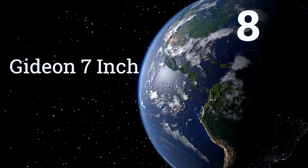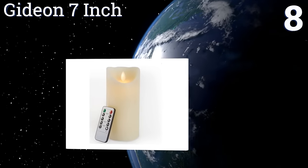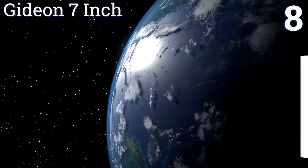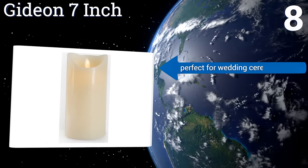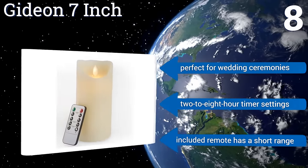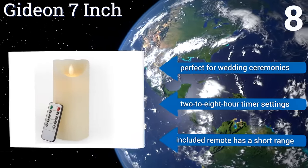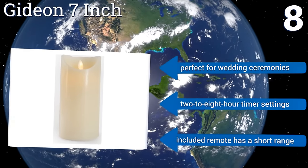Coming in at number 8 on our list, the Gideon 7-inch is an attractive rich ivory colour and has a pleasant vanilla scent that will make it a welcome addition to any room. It features a soft flame that flickers smoothly and gently and creates a soothing and relaxing environment wherever you put it. It's perfect for wedding ceremonies and has 2-8 hour timer settings. However, the included remote has a short range.